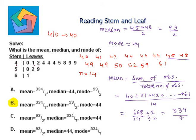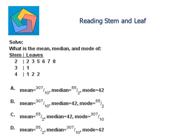Next problem: solve what is the mean, median, and mode of the next stem and leaf plot. Reading the entries: 22, 23, 25, 26, 27, 28, 31, 41, 41, 42, 42, 42, 42. Counting gives n = 10.